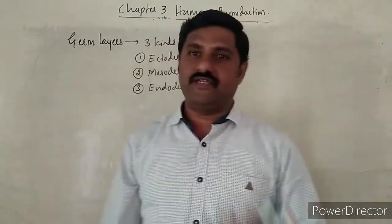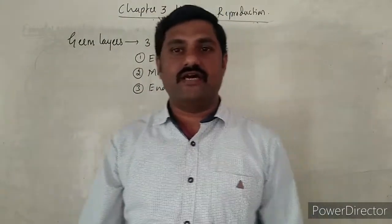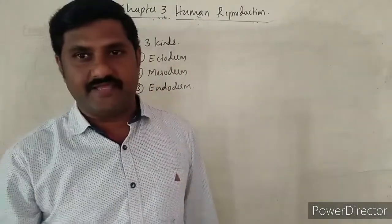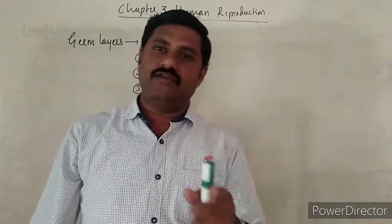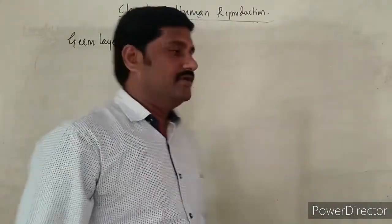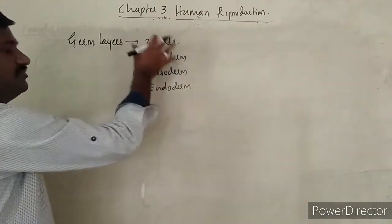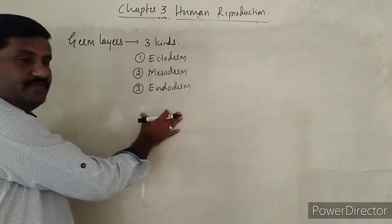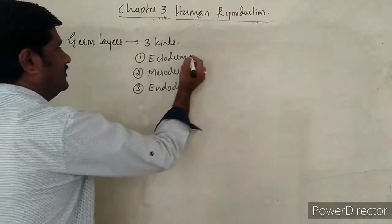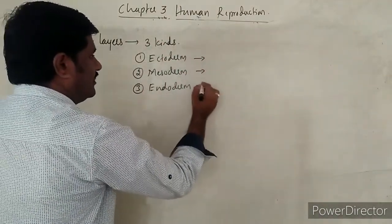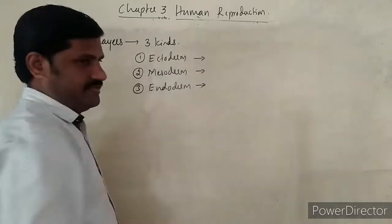There are three germ layers that we come across. Since human beings are so advanced animals, they are set up as triploblastic in nature, as already you have learned in animal kingdom. These are triploblastic animals, hence three germ layers are present.